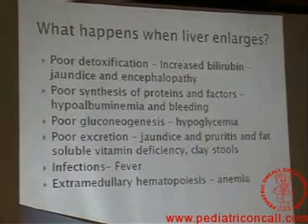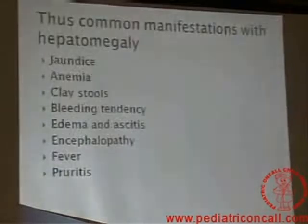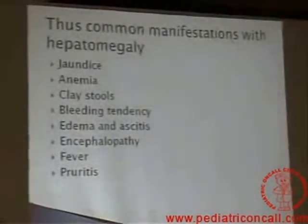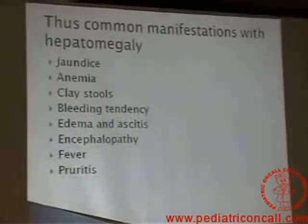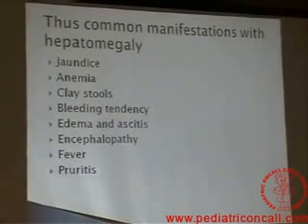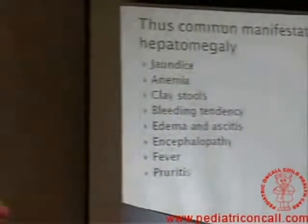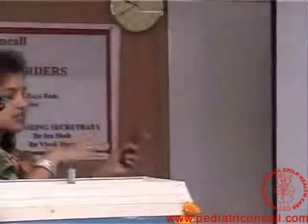The child may come with anemia. Common manifestations of hepatomegaly are jaundice, anemia, platelet disorders, obstruction, bleeding tendency, edema and ascites, coagulopathy, fever, and pleuritis. These are the common manifestations. So if we see any of these, think of a liver problem.